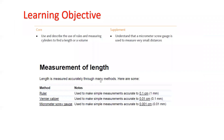When measuring length, we can use a meter rule, measuring tape, vernier caliper, or a micrometer screw gauge. The most accurate one is the micrometer, which can measure up to 0.01 millimeter.